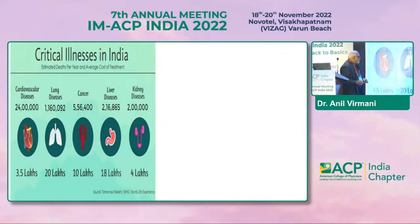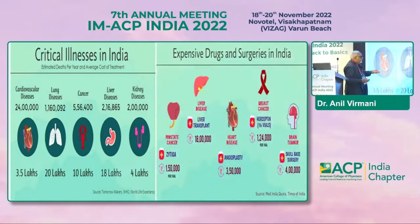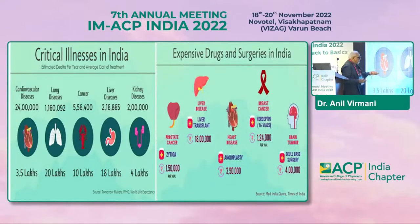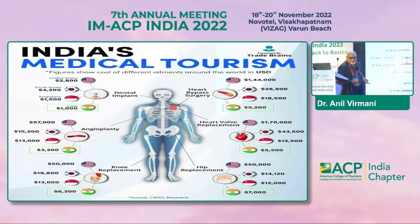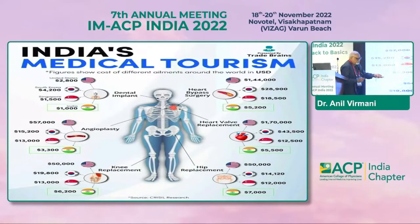Look at the critical illnesses in our country: cardiovascular, lung, cancer, liver, kidney diseases — and look at the costs: 1 lakh, 3 lakh, 50 thousand. However, we are still much better off compared to abroad. The cost of a heart bypass surgery is $144,000 in the US, but only $5,200 in India. Similarly, hip replacement costs $50,000 in the US versus $7,000 in India. So in that way we are much better off.